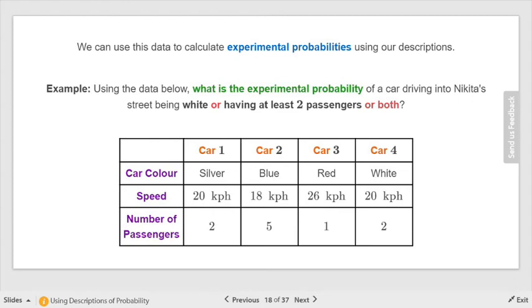Using the data below, we want to know what is the experimental probability of a car driving onto Nikita Street being white or having at least two passengers or both. So this is the probability that it's white or—that means union—and it has at least two passengers, or both. As long as they don't tell us it can't be, we assume that it can be both. All we need to do is look on here and every car that makes that possible is a winner.